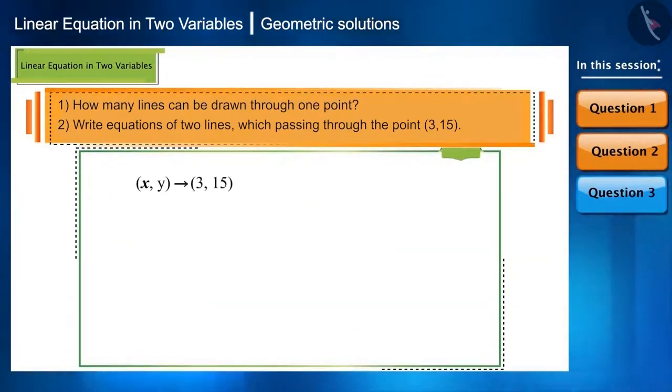The given point has x and y coordinates. So, if we examine it carefully, we can say that when x is 3, then y is 15. That is, y is 5 times x.